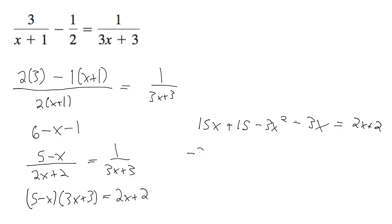Alright, so negative 3x squared plus 12x plus 15 is equal to 2x plus 2. I'm going to get 3x squared plus 3x plus 15 equals 0.